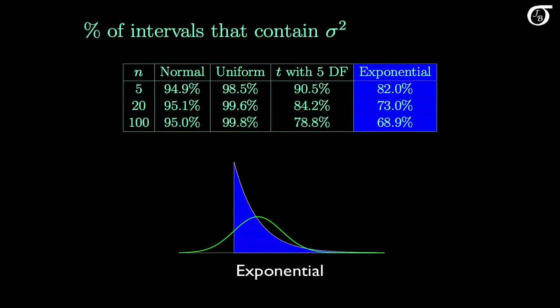Let's look at one more distribution: the exponential distribution. The estimated coverage probabilities are much less than the stated 95%. It starts out around 82% for a sample size of 5, and again gets worse as the sample size increases. The exponential distribution has a sharper peak and more area far out in the tail compared to the normal distribution. Sampling from the exponential distribution results in more extreme values of the sample variance, so methods based on the normal distribution will tend to underestimate the variability of the sampling distribution of the sample variance. The resulting intervals will tend to be too narrow, and coverage probabilities will be much less than the stated value of 95%.